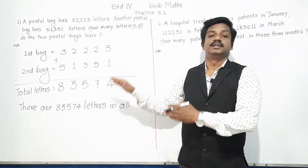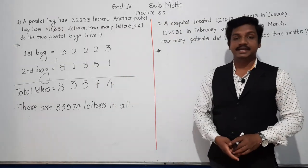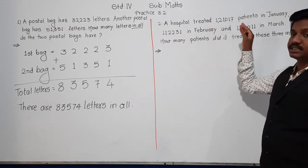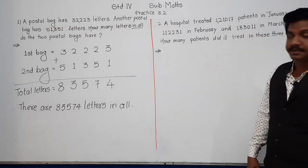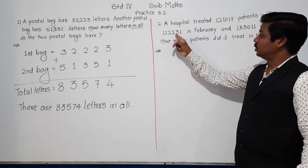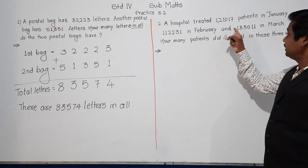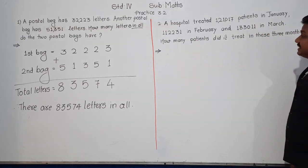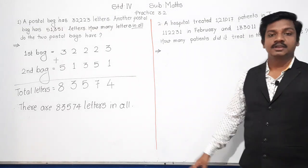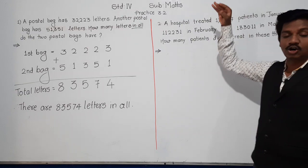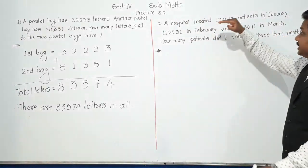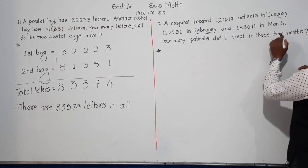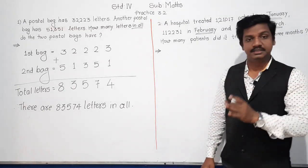Understood? That is our answer. Let us move towards the next problem — problem number 2. A hospital treated 1,21,017 patients in January, 1,12,231 in February, and 1,33,011 in March. How many patients did it treat in these 3 months? There is a hospital in which patients are treated across 3 months: January, February, and March.